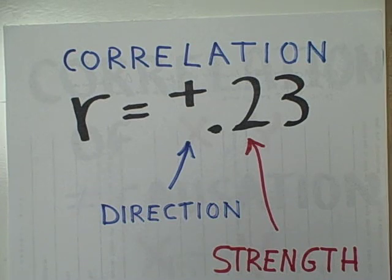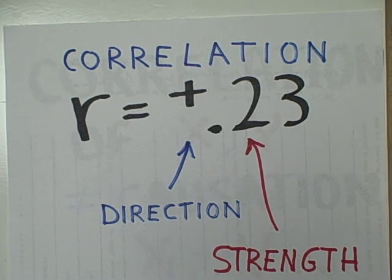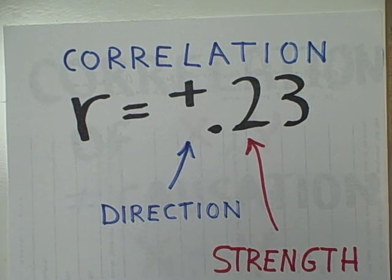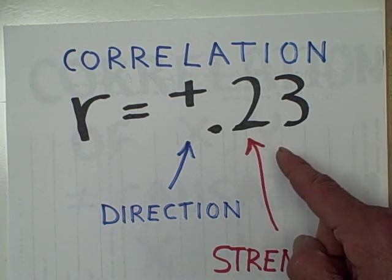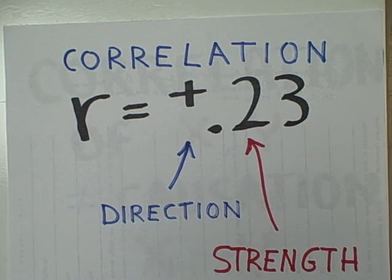If the digit in the tenths place is 0, 1, or 2, we would say that we have a low or weak correlation, perhaps just entering the moderate range around 0.2. If we see a 2, 3, 4, or 5 in the tenths place, then we have a correlation in the moderate range — there are still quite a few exceptions to the trend. It is only when we see a 6, 7, 8, or 9 in the tenths place that we can say we really have a strong correlation coefficient.